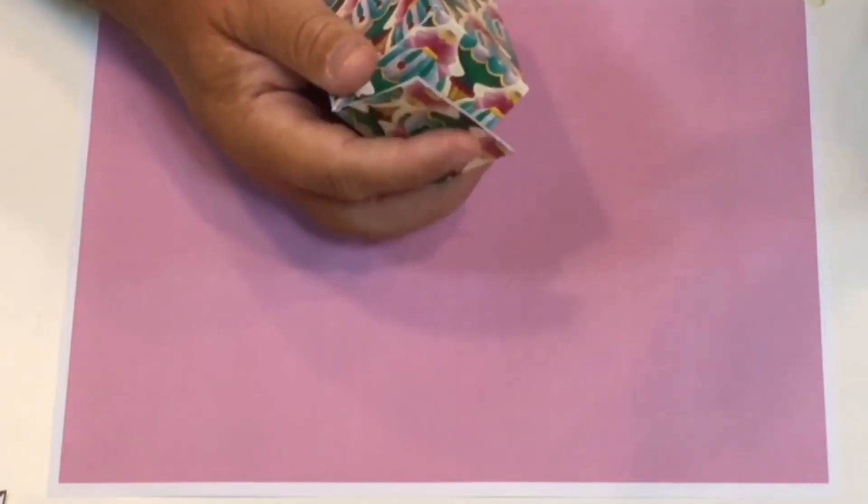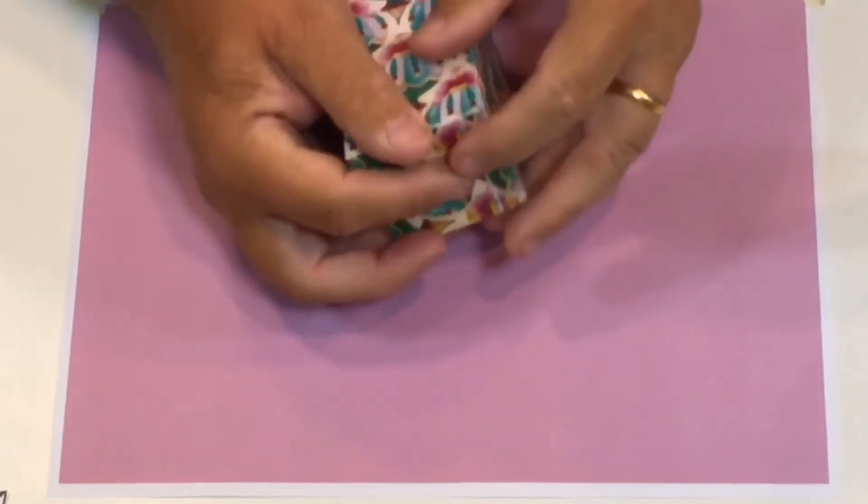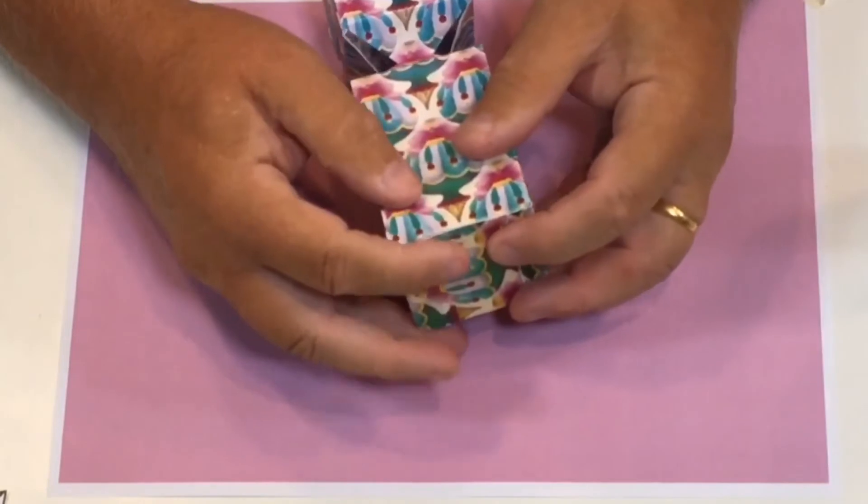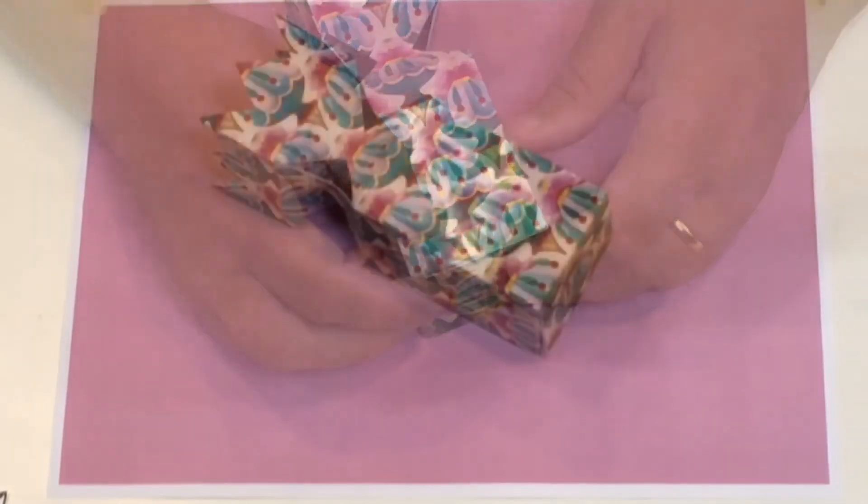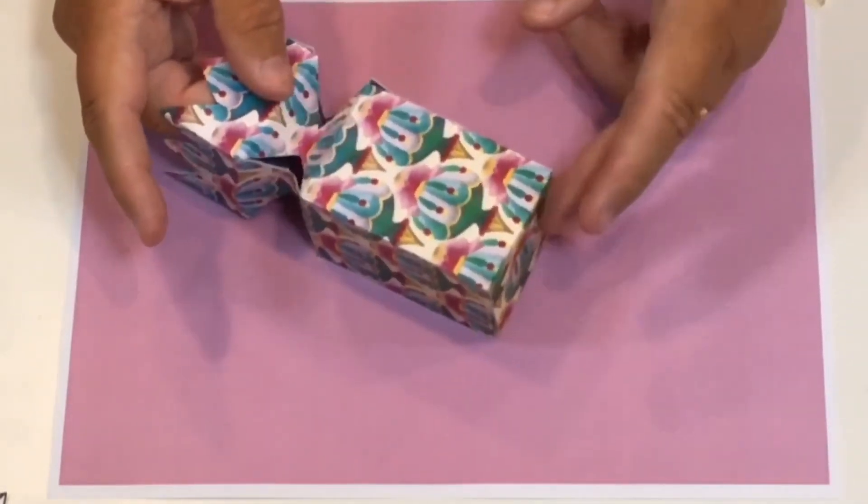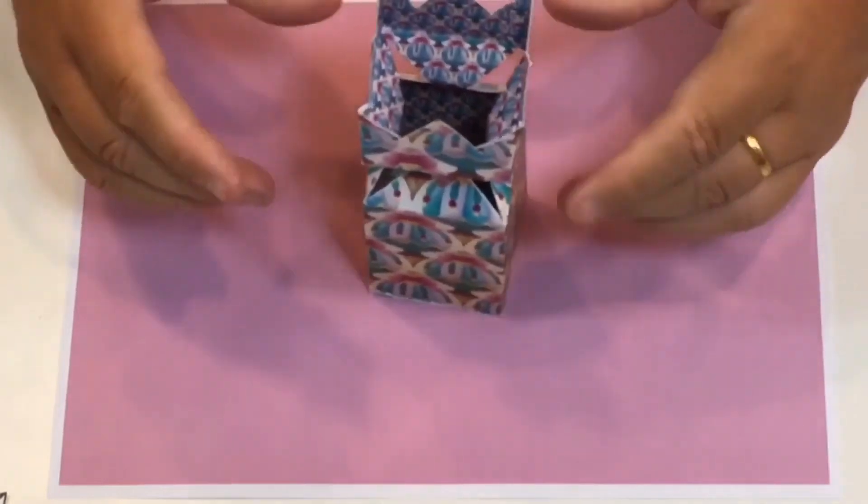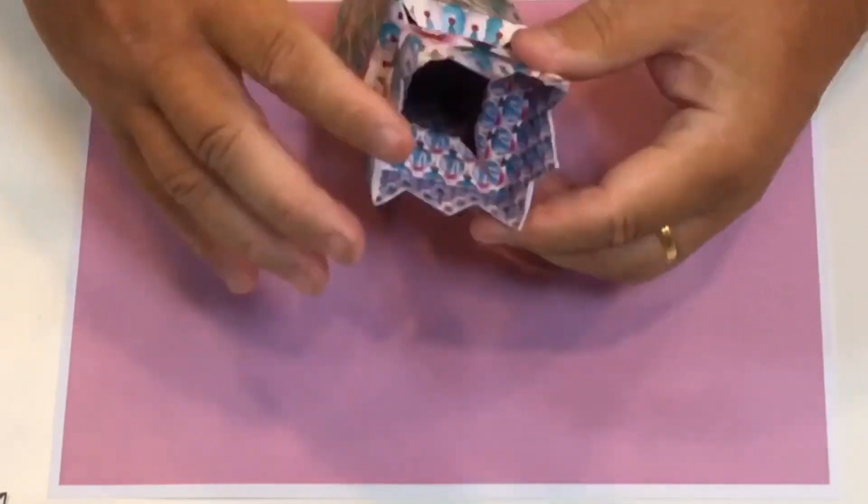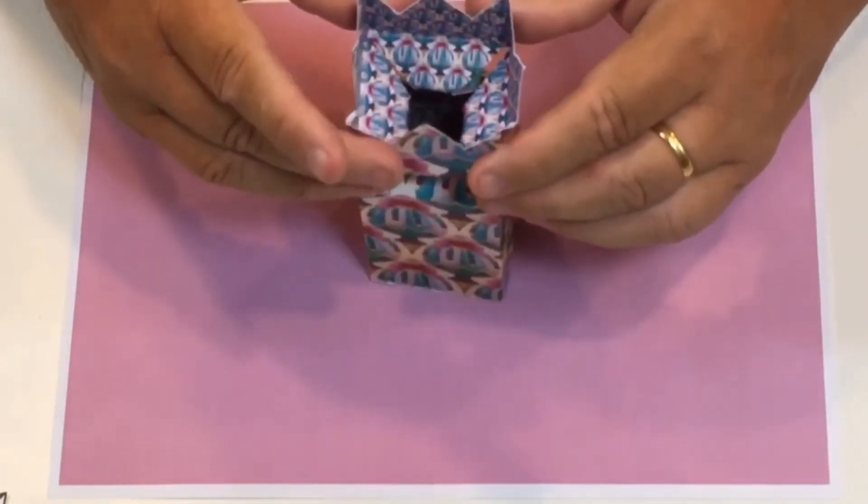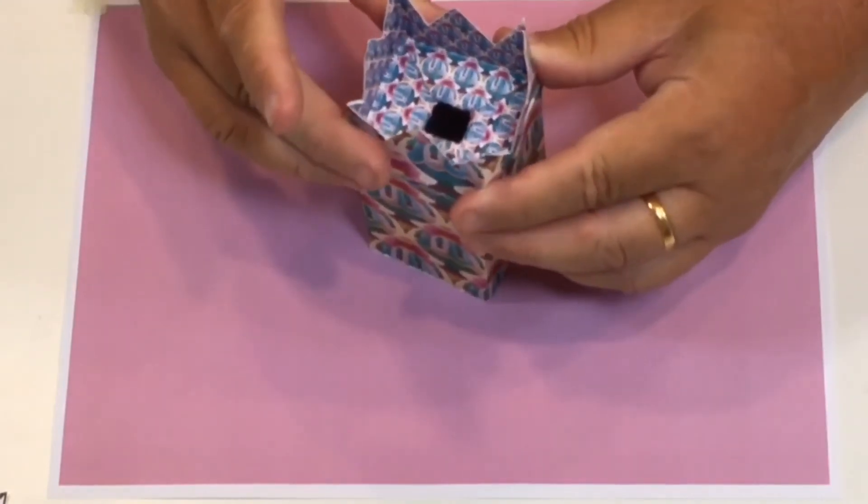And that will keep that in position. Just hold that in position until it's dry. So that's the base securely stuck now so you can turn that up, and then that can just open. You fill it up with whatever you want and then that can just press down. You've got a sealed box there.